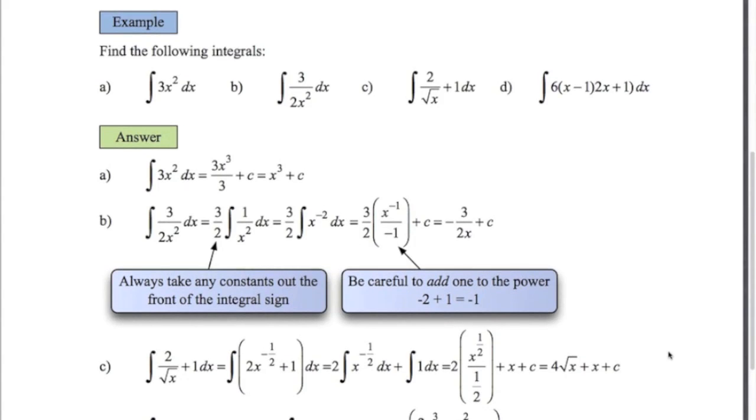Part c, a bit of index work here. Two over root x plus one. So root x is x to the power of a half on the bottom line, which becomes x to the power of minus a half on the top line. So just leaving the two out the front there. Add one to the power. So negative a half plus one gives you positive a half. Divide by that new number. Two stays out there. And for the integral of one.